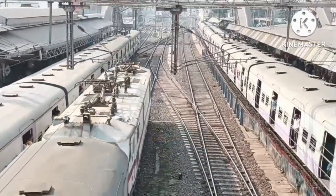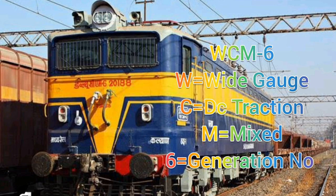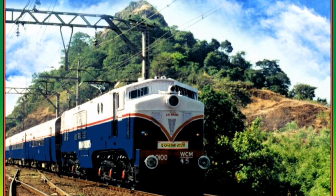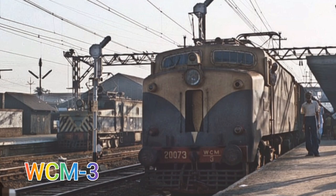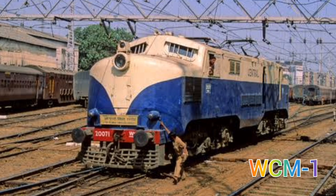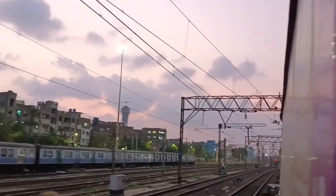Next, coming to mixed type DC traction, where M will denote the mixed category. Let's watch them one by one. In the last category of electric engines comes locomotives running on both AC and DC traction. Let's see them one by one with images for better understanding.